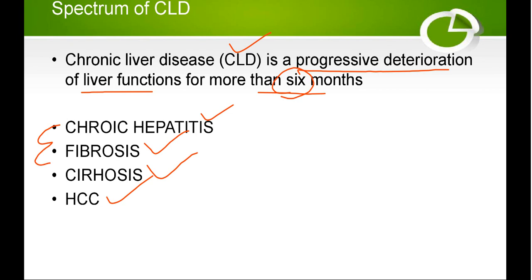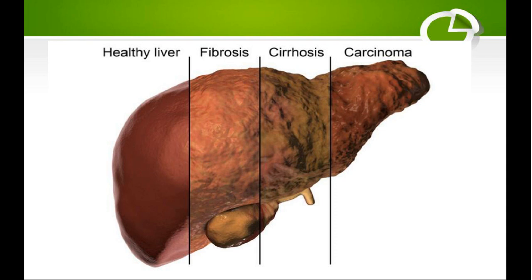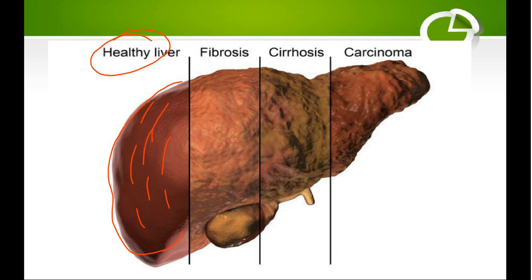These stages follow the same sequence leading toward complications. This is a diagrammatic representation of the same spectrum. First we have a healthy liver — its surface is completely smooth, its architecture is not disturbed, and there is no fibrosis. When slight roughness appears within it, that stage is referred to as hepatitis or inflamed liver.